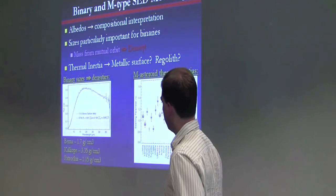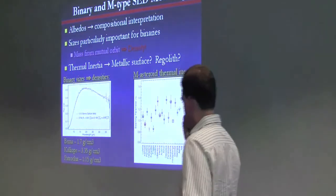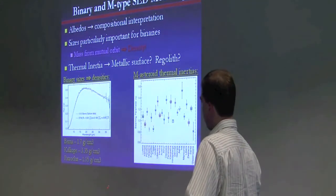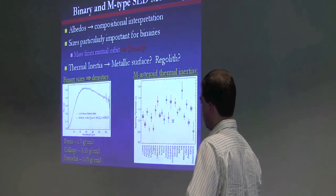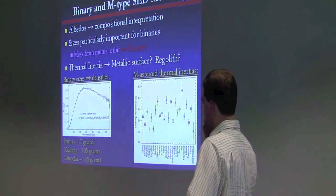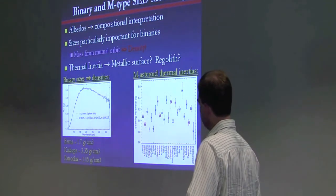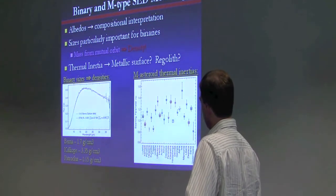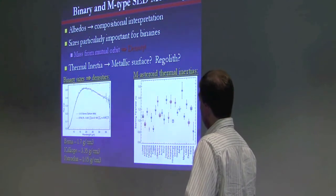Frank Marchi is leading a program which is using Spitzer to look at a bunch of binaries. I think 20, 25 or so. And here are a few densities that we've derived already.